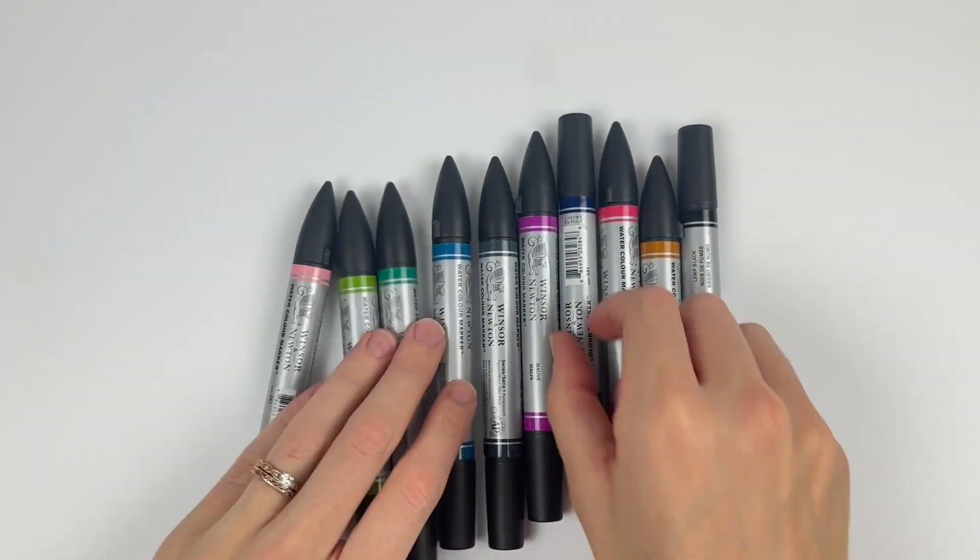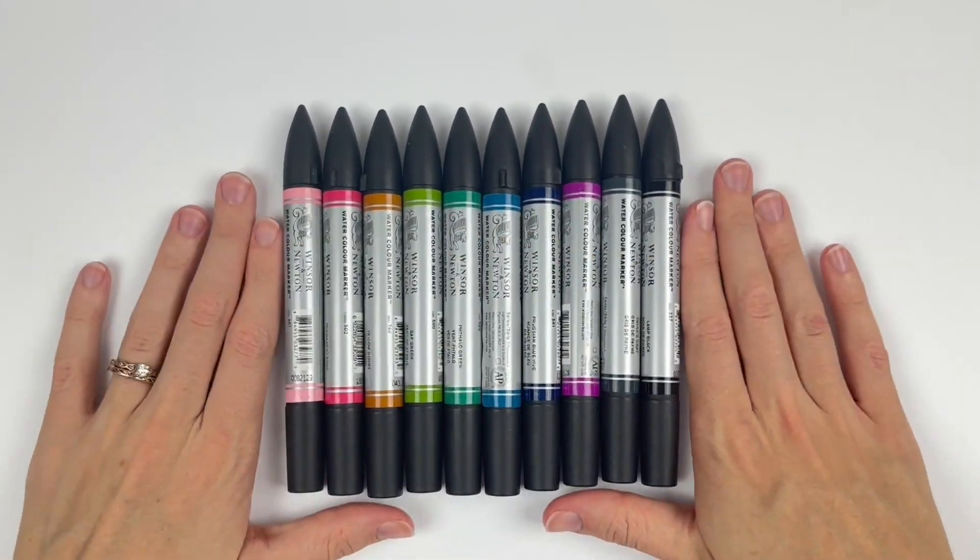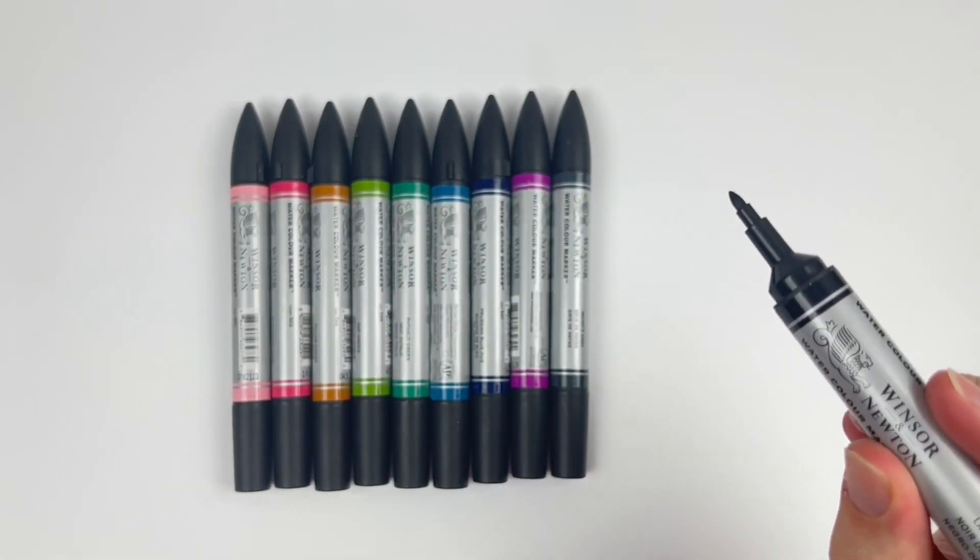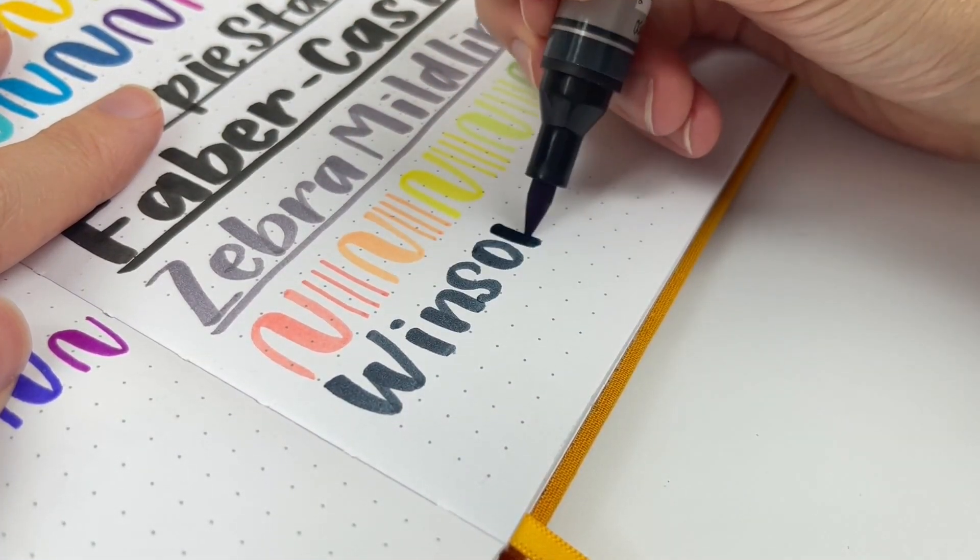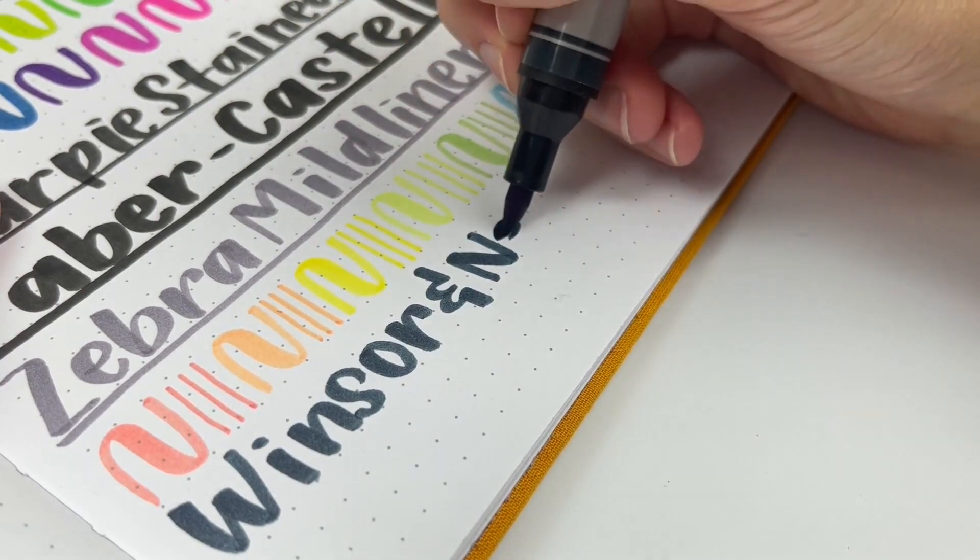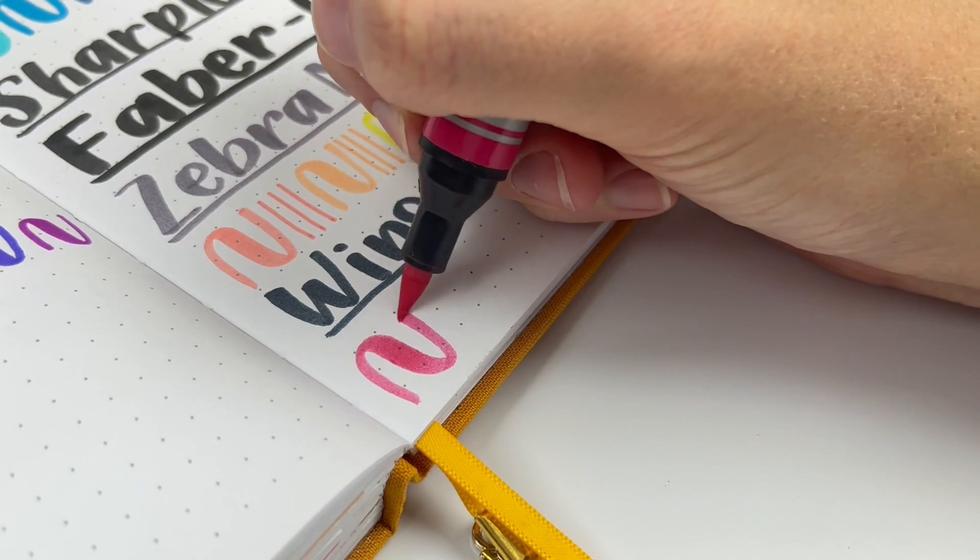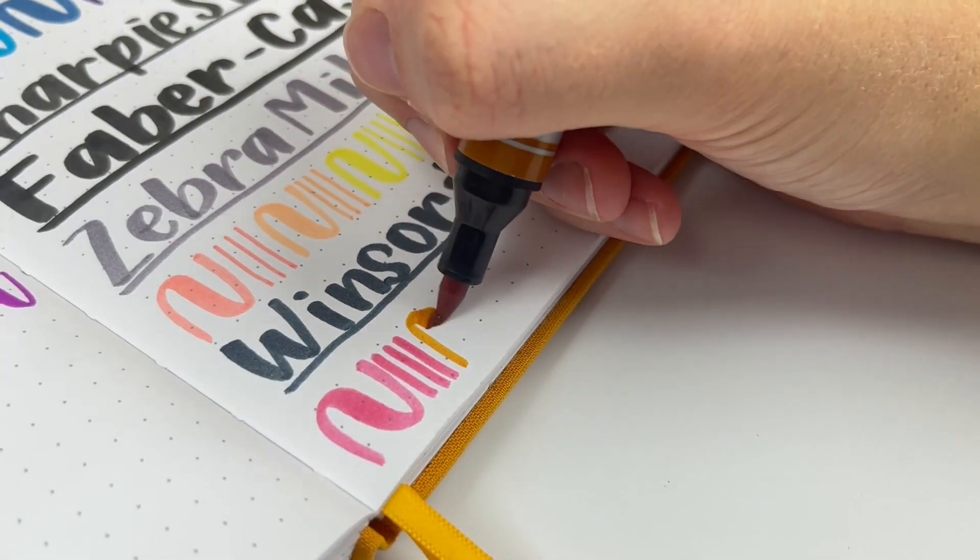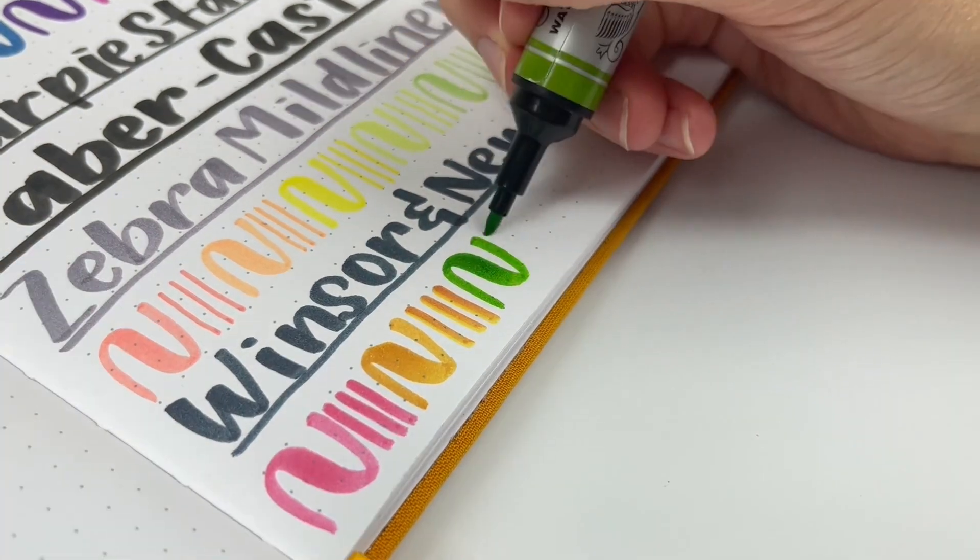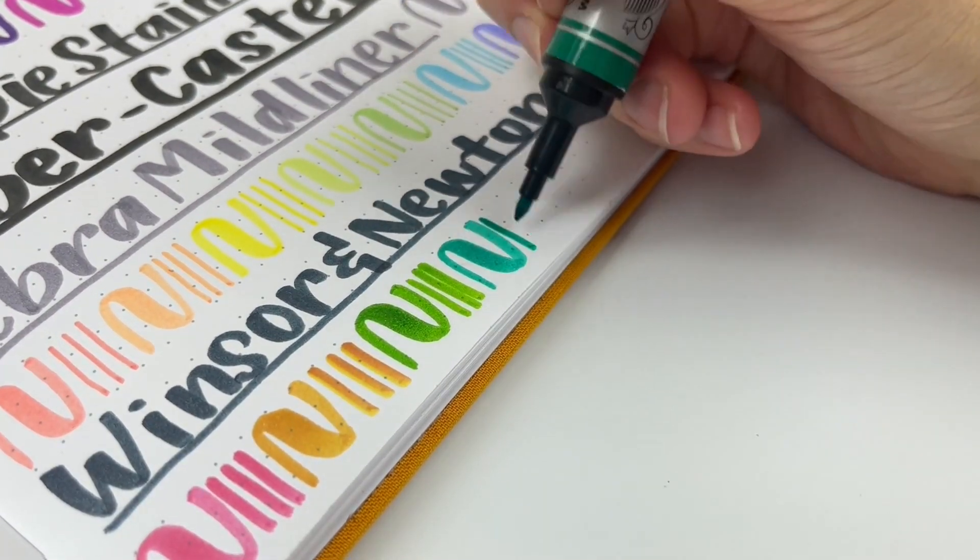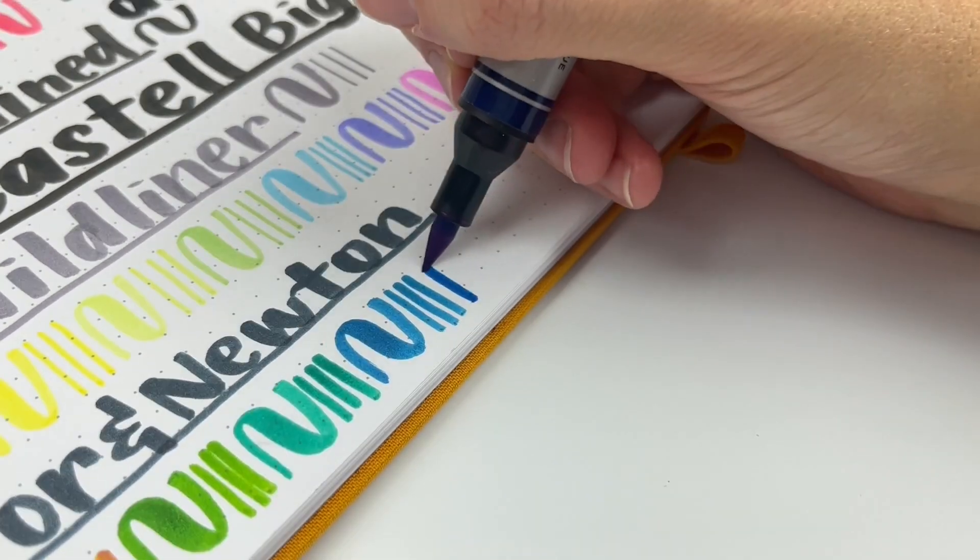These are the Winsor & Newton Watercolor Markers, and they're so nice. But don't get these confused with the Winsor & Newton Brush Markers. I've purchased those by mistake, and they have a really floppy brush tip, and they're alcohol-based, which bleeds through everything. But the watercolor markers are the perfect brush tip. Seriously, it's so nice and has just the right bounce. They also have a fine tip, but in my experience, the felt of the fine tip frays really quickly, so I wouldn't get them just for that.